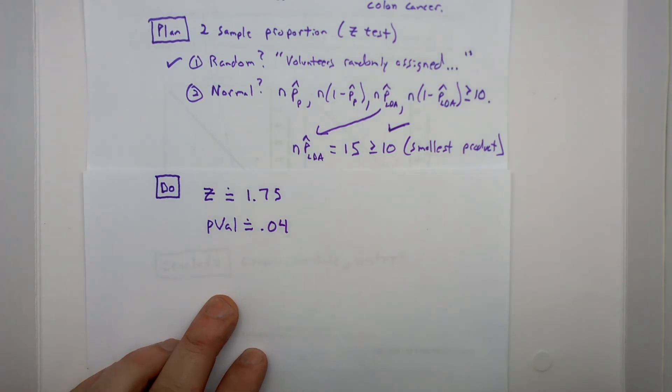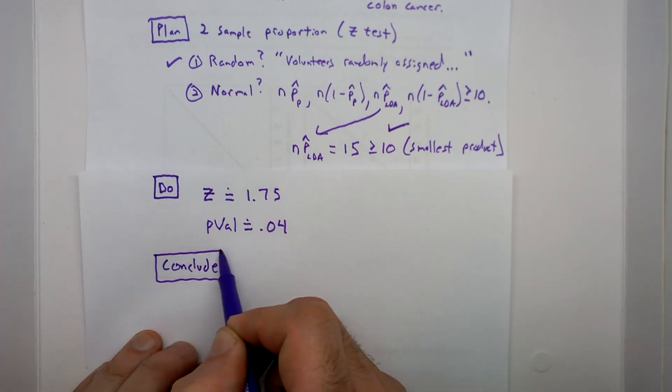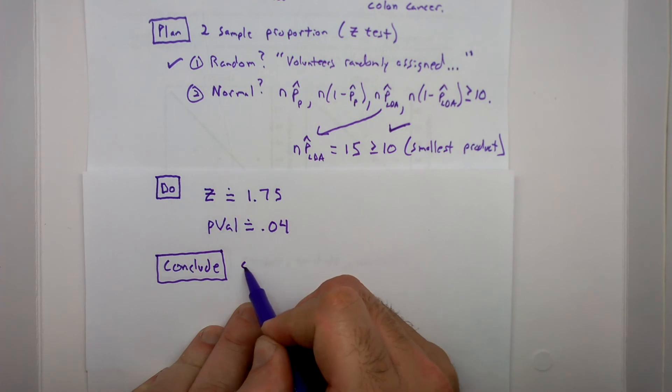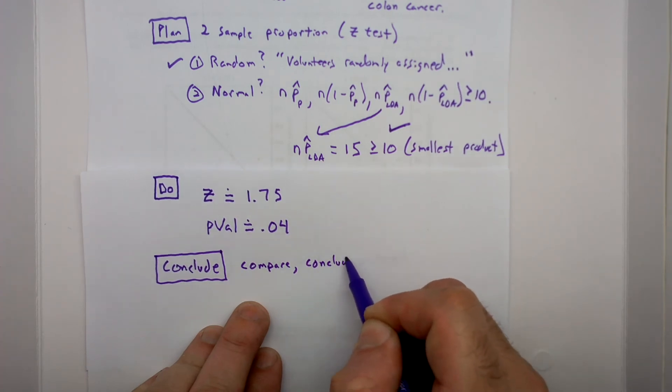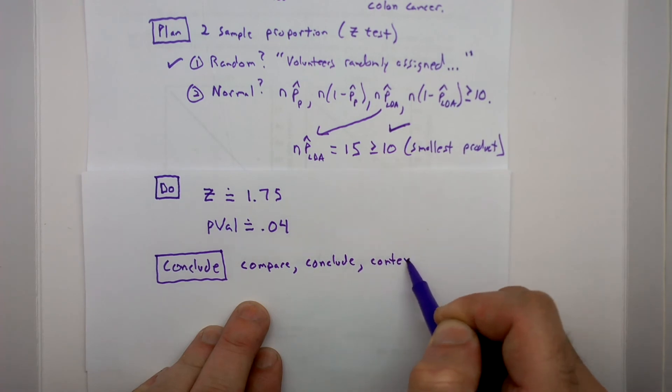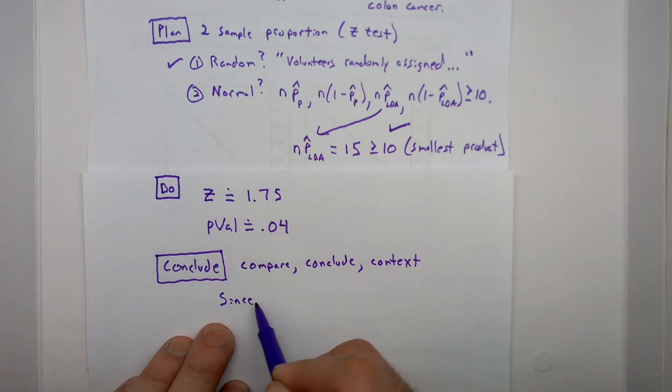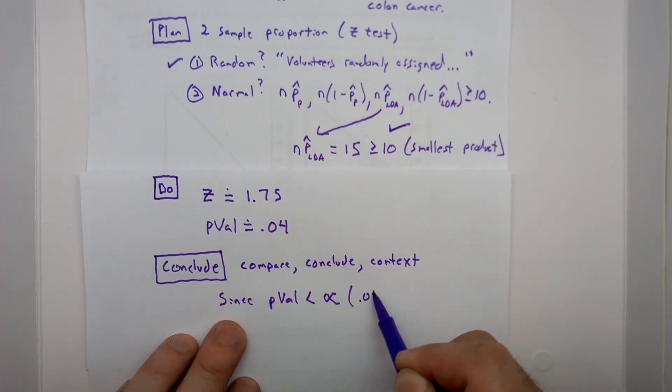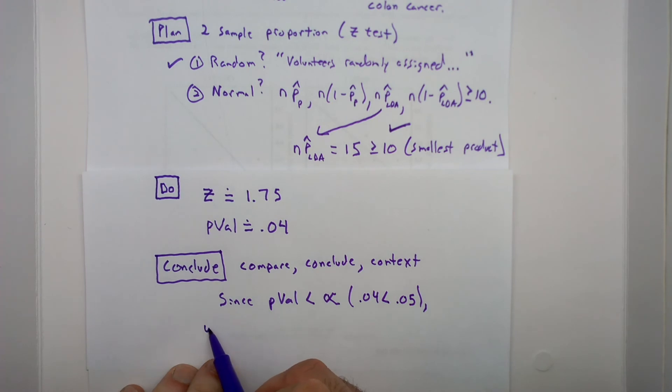Now we are ready for our conclusion. State, plan, do, then conclude. There are three parts to our conclusion. We'll call them the three C's. Compare, conclude, context. We will compare our p-value to our alpha. Since our p-value is less than alpha, that is, .04 is less than .05. That's the comparison. Now conclude. We reject H-naught.